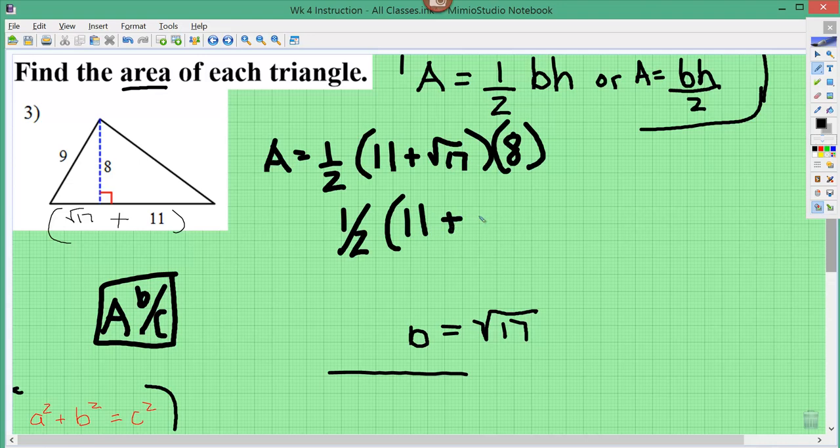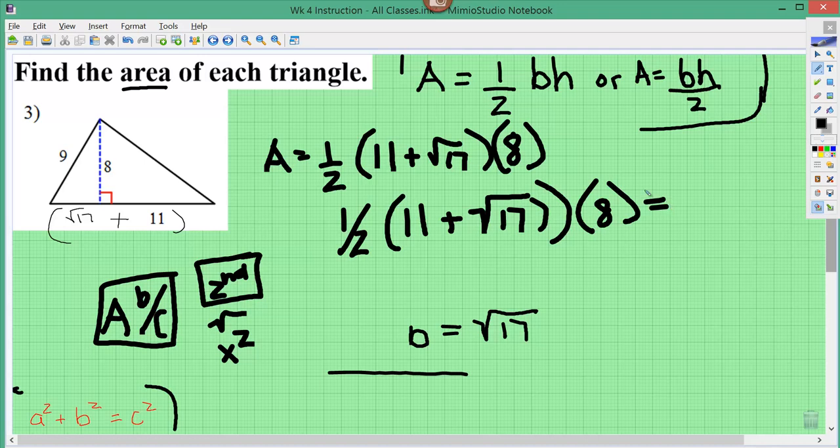Do a left parenthesis, 11 plus the square root of 17 on the TI-30s, you would hit the second button, the upper left second button. And then you would hit the button that says x squared, because when you hit the second button, you'll notice in a different color, you see the square root there. So hit the second button, then the square root, then 17, then right parenthesis, then right parenthesis again. And then either type times 8 or just left parenthesis 8, right parenthesis, and hit equal. And that will give you the answer.